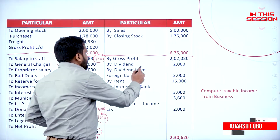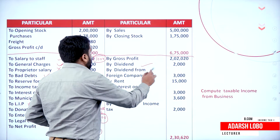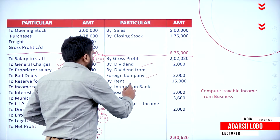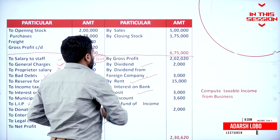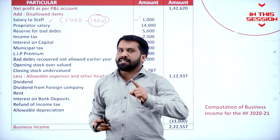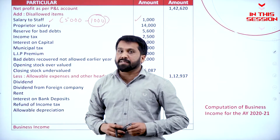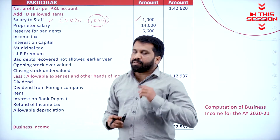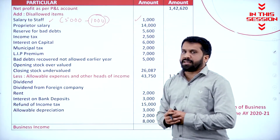We have dividend, we have dividend from foreign, rent, interest on bank. 1,000 is the odd item — you paid for personal. That 1,000 you are supposed to consider.